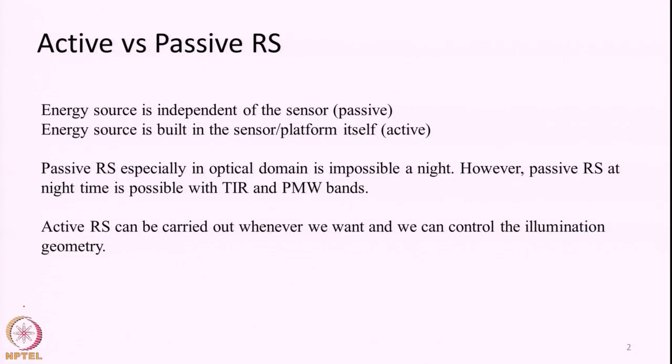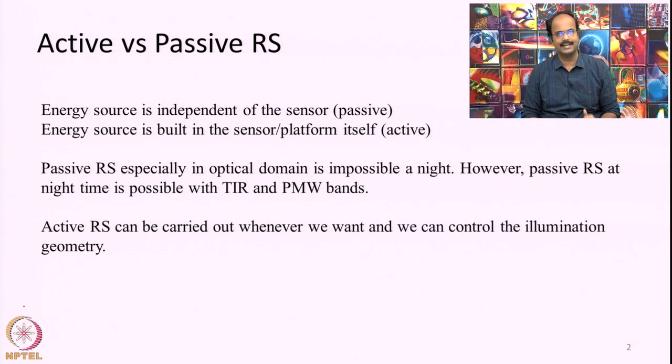Hello everyone, welcome to the next lecture in the course Remote Sensing Principles and Applications. In the last lecture we discussed and concluded the topic of passive microwave remote sensing or passive microwave radiometry. From this lecture onwards and in the next few lectures we are going to discuss about active microwave remote sensing, and especially the imaging radar. First of all we will quickly recap what is active remote sensing and what is passive remote sensing. We have already discussed this in earlier classes but just to get a quick recap I am telling it again.